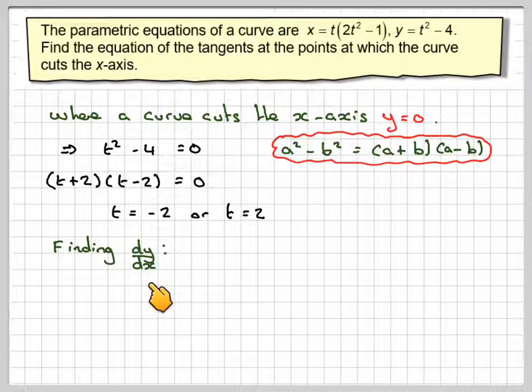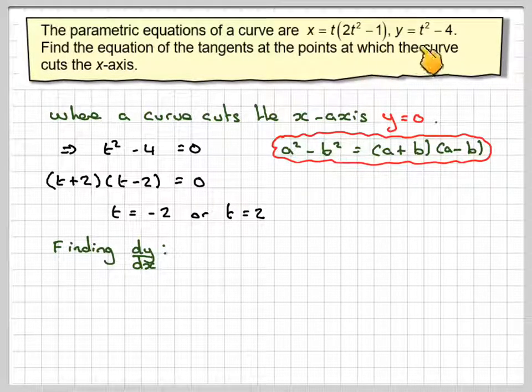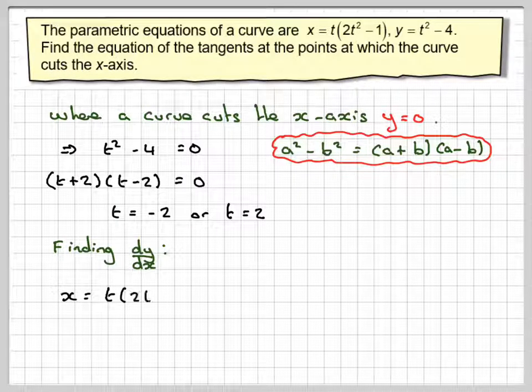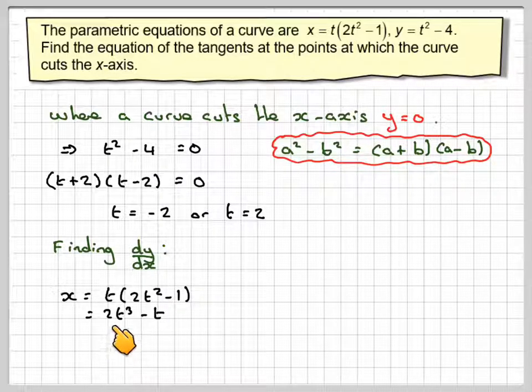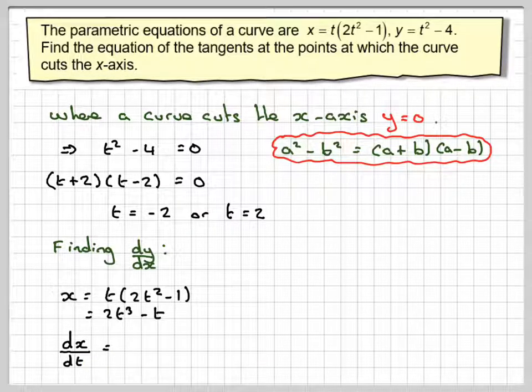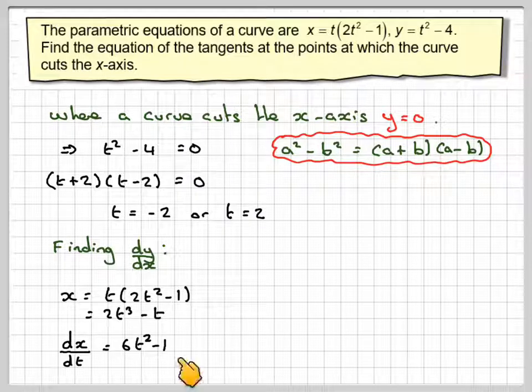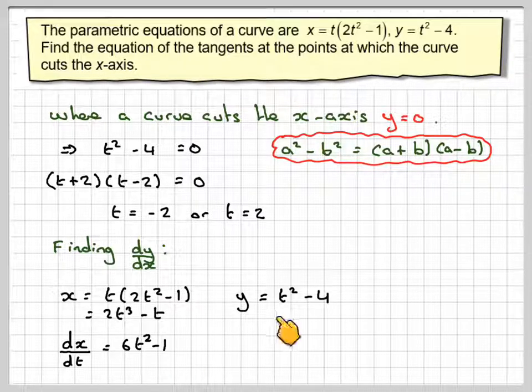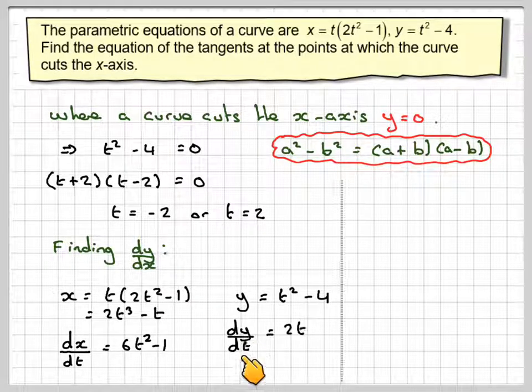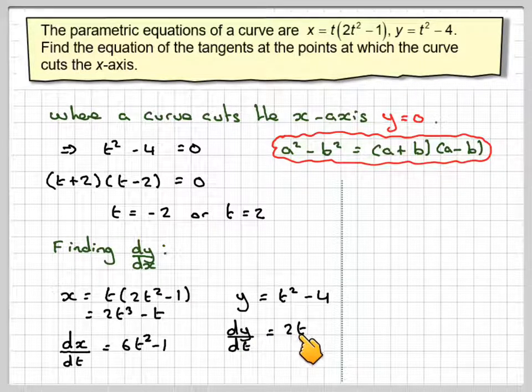Finding dy by dx, we differentiate each of these separately in terms of t. So x is t(2t squared minus 1), that's equal to 2t cubed minus t. If I do dx by dt, that's going to be 6t squared minus 1. For y equals t squared minus 4, differentiating that, dy by dt is 2t.